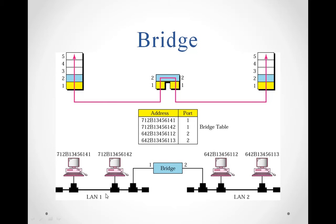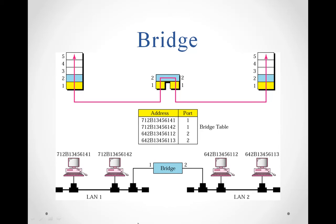Here are two LANs: LAN one has different computer systems connected to this bridge via port one, and another LAN with many computer systems, each having a separate physical address, connected to port two of the bridge. So bridges connect two different local area networks, making them act like a single LAN, effectively extending the capacity of the LAN.